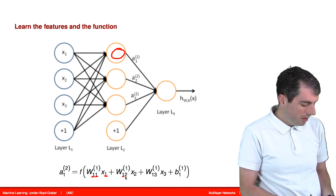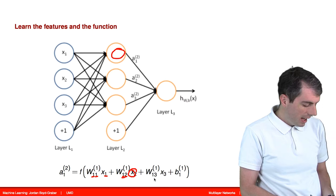w11 means that this is going to be used with the first feature in the first hidden node. w12 is going to be used with the second feature in the first hidden node.